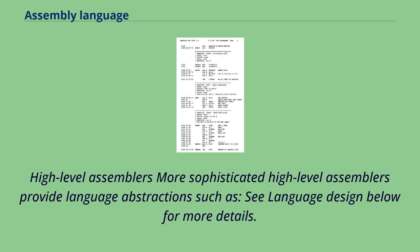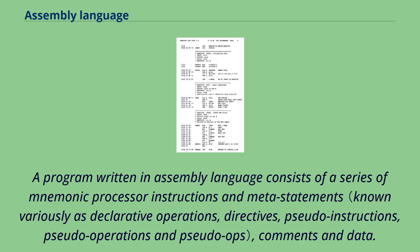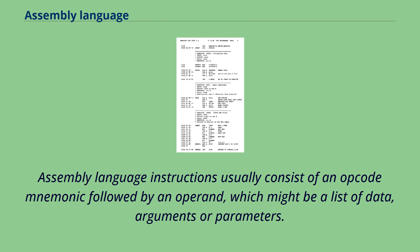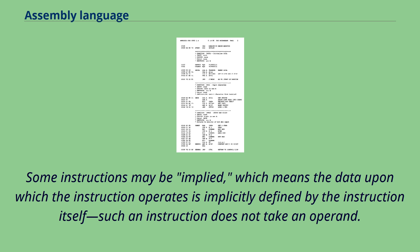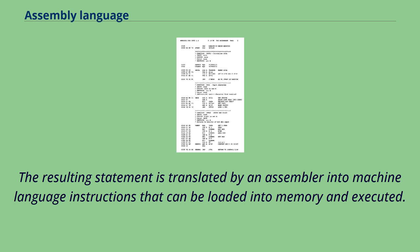More sophisticated high-level assemblers provide language abstractions. A program written in assembly language consists of a series of mnemonic processor instructions and meta-statements, comments and data. Assembly language instructions usually consist of an opcode mnemonic followed by an operand, which might be a list of data, arguments or parameters. Some instructions may be implied, meaning the data upon which the instruction operates is implicitly defined by the instruction itself; such an instruction does not take an operand. The resulting statement is translated by an assembler into machine language instructions that can be loaded into memory and executed.